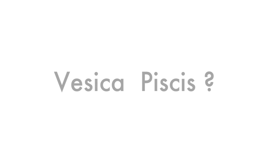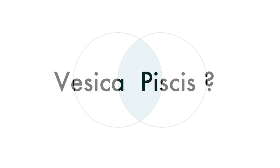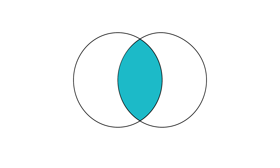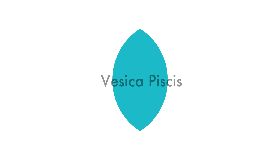So what is the Vesica Pisces? The Vesica Pisces is simply two circles of the same diameter overlapped, creating a form in the middle — a geometric form that is called the Vesica Pisces.